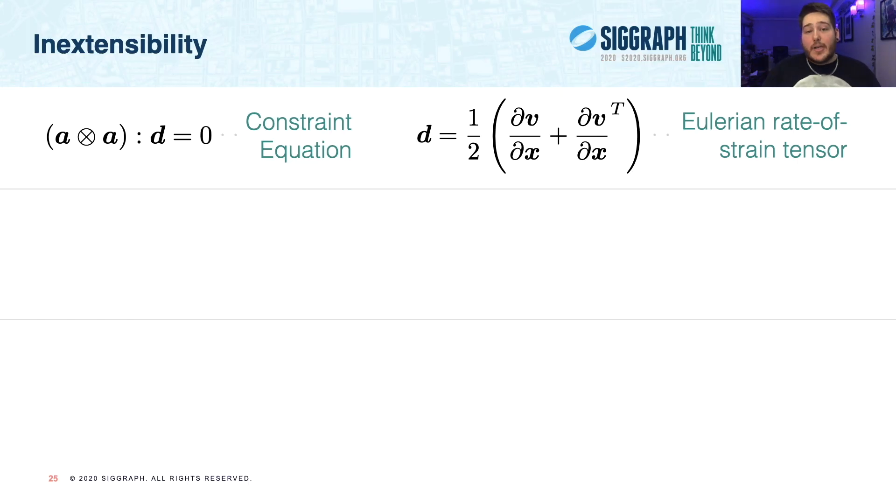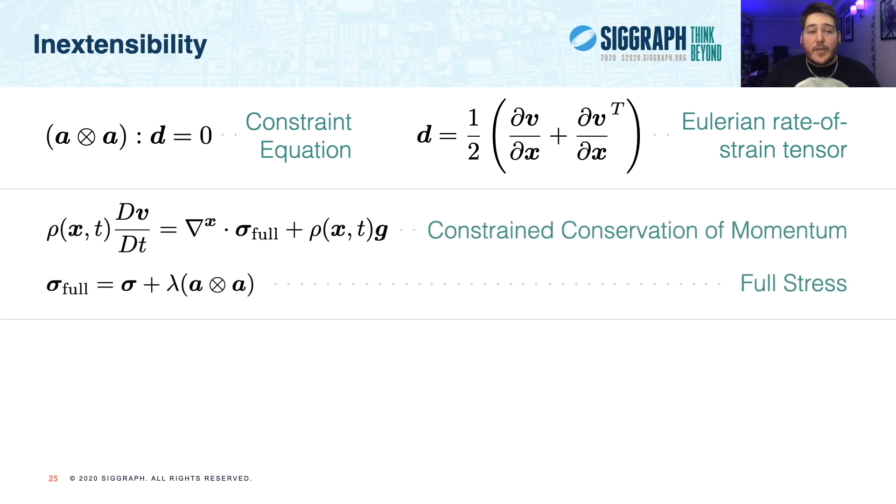So, with that motivation in mind, let's see how our inextensibility solver works. We begin with the inextensibility enforcing constraint at the top, where we see the time-dependent fiber direction A, as well as the Eulerian rate of strain tensor D, as shown to the right. With this constraint in hand, we may write a constrained equation for conservation of momentum, as shown in the second row. And notice that in this equation, we introduce the notion of the full stress, which includes not only our isotropic stress, sigma, but also some unknown tension along the fiber, represented in magnitude by the Lagrangian multiplier, lambda.